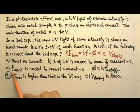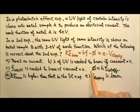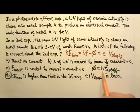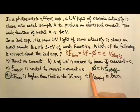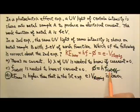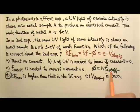By the way, the cutoff frequency is related to the work function. The work function equals h times the cutoff frequency, because the minimum photon energy required to eject an electron equals the work function. So if we know the work function, we know the cutoff frequency. Both the work function and the cutoff frequency are properties of the metal sample.